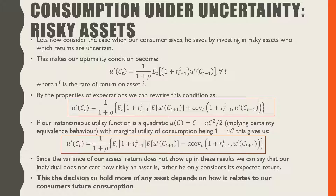Now let's consider the case where our consumer saves by investing in risky assets whose return is uncertain. This makes our optimality condition become: the marginal utility from consumption in period T is equal to 1 over (1 + rho) — our subjective discount factor — times our expectation based on all information at time T of (1 + R_{t+1}^i) — the rate of return on asset i in period T+1 — times the expected marginal utility from consumption in period T plus 1. By the properties of expectations, we can rewrite this condition as the expectation of the rate of return on asset i times the expectation of the marginal utility in period T plus 1, plus the covariance between these two terms.